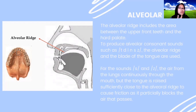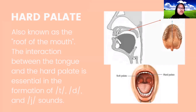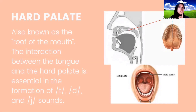Next, the hard palate, also known as the roof of the mouth. The interaction between the tongue and the hard palate is essential in the formation of sounds like D, J. The tongue makes contact with the hard palate to produce these sounds.